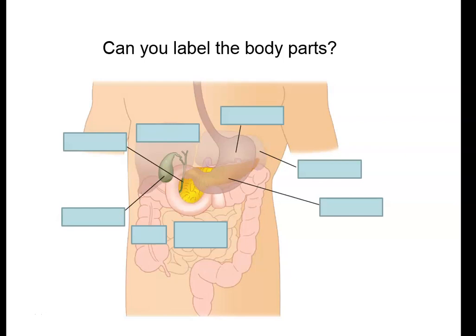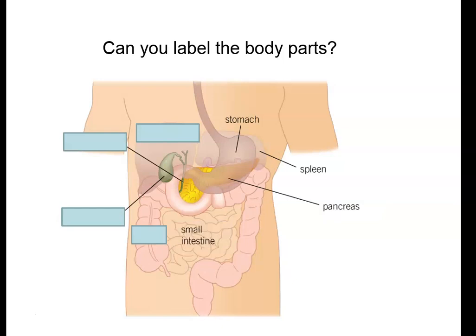Let's look at where the pancreas is situated inside the body. In the middle at the top we have the stomach, and then tucked in behind the stomach we have the spleen. The spleen is one of the places in your body where red blood cells are broken down - it has other roles as well, but it is one organ you can actually live without. Just in front of that we have the pancreas. Then we have the small intestines, made up of two parts: the duodenum and the ileum. Then we have the large intestines, again made of two parts: the colon and the rectum.